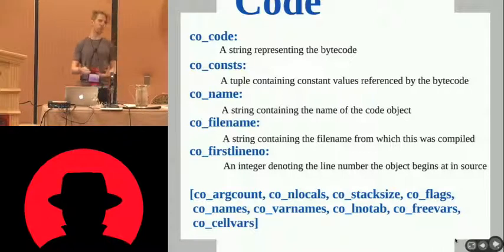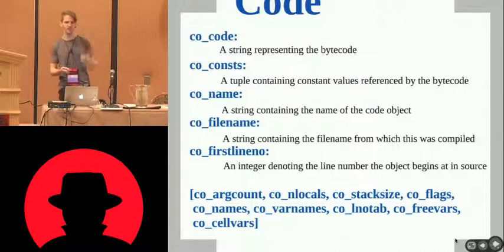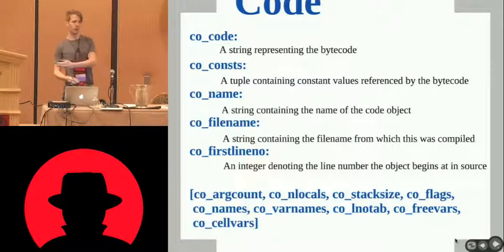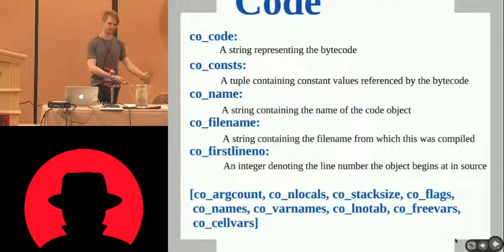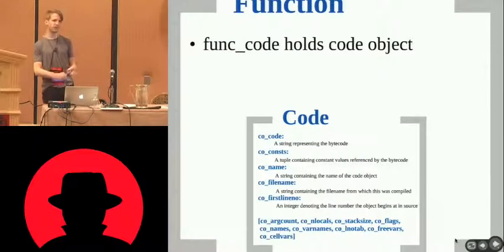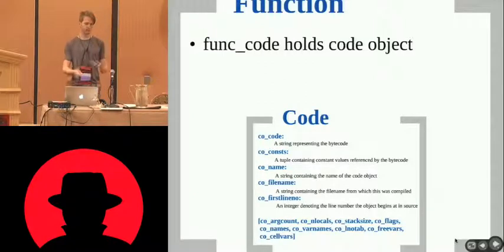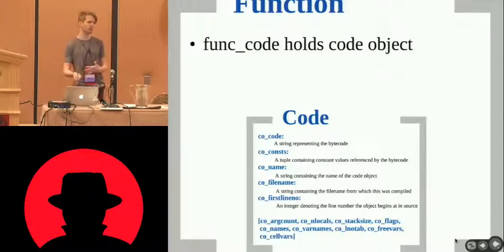It's kind of a big onion and you have to peel it back. Eventually you get back to a code object, which is a representation of the bytecode, variables, and run state. Some of the attributes include co_code, which is the string representation of the bytecode, constants, names, filenames, and the line number in the source code. Not everything has a code object — functions have code objects, generators have code objects, methods have code objects via the function object within them, but not everything does. So there's some reconstruction needed when we can't find a code object.